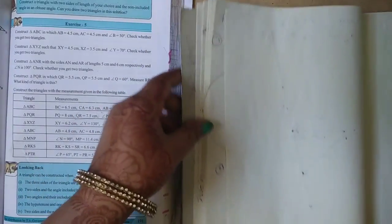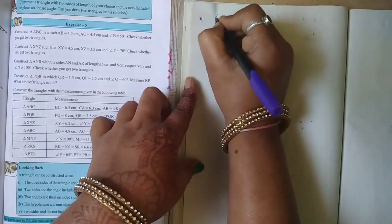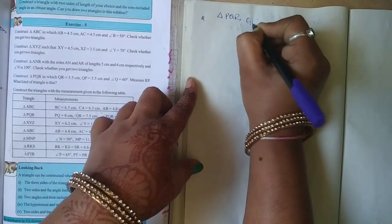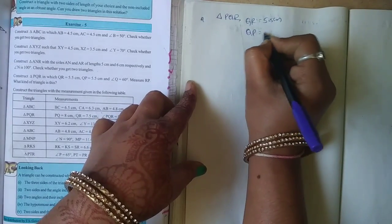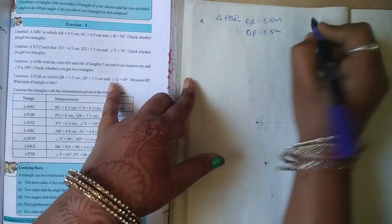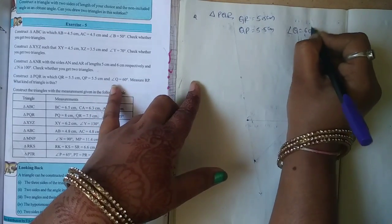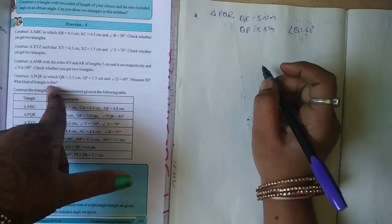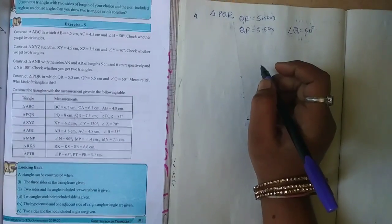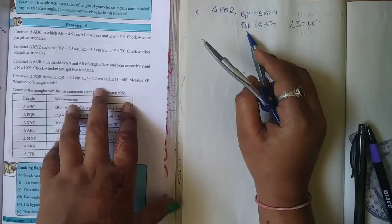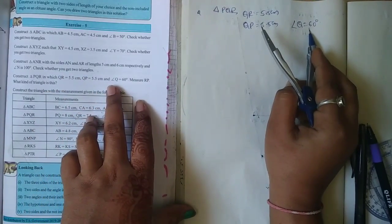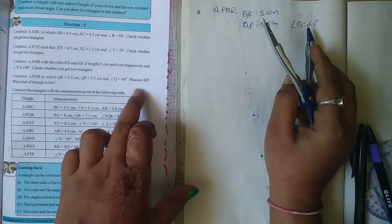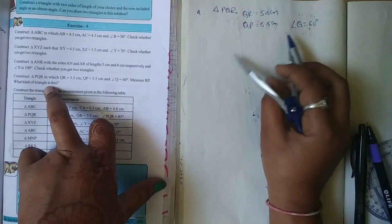Fourth problem: construct triangle PQR where QR equals 5.5 cm, QP equals 5.5 cm, and angle Q equals 60 degrees. Measure RP. What kind of triangle is this?